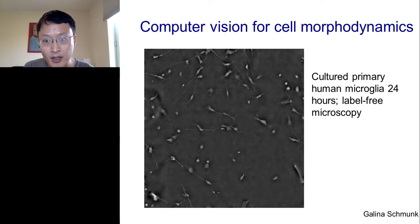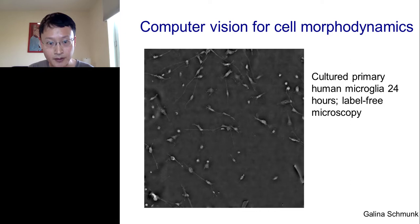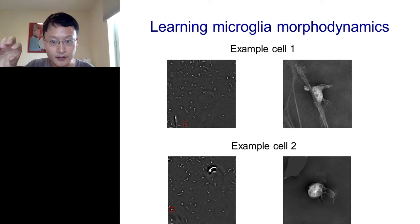The setup is that Tom and Shaolin's group are interested in studying microglia — the immune cells in the brain. Here's an image that Galina, one of our key collaborators, took of this microglia over 24 hours using label-free microscopy. What Michael did is develop a system to automatically track each microglia cell and study the morphodynamics of each individual cell. It first tracks the individual cells and classifies the different cell types. You can think of the computer vision algorithm as being like a private eye overlooking each of these microglia cells, except that it's doing this for thousands of cells in parallel.